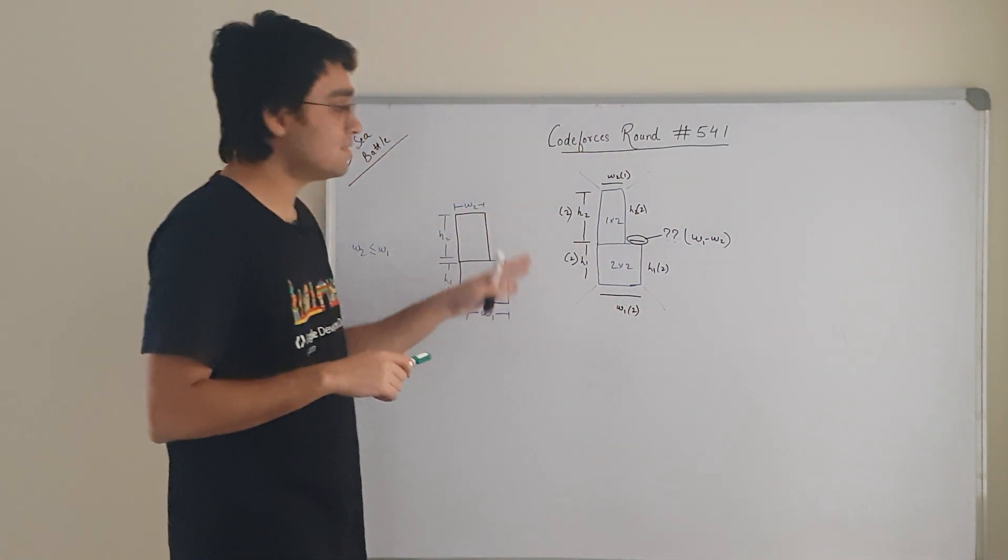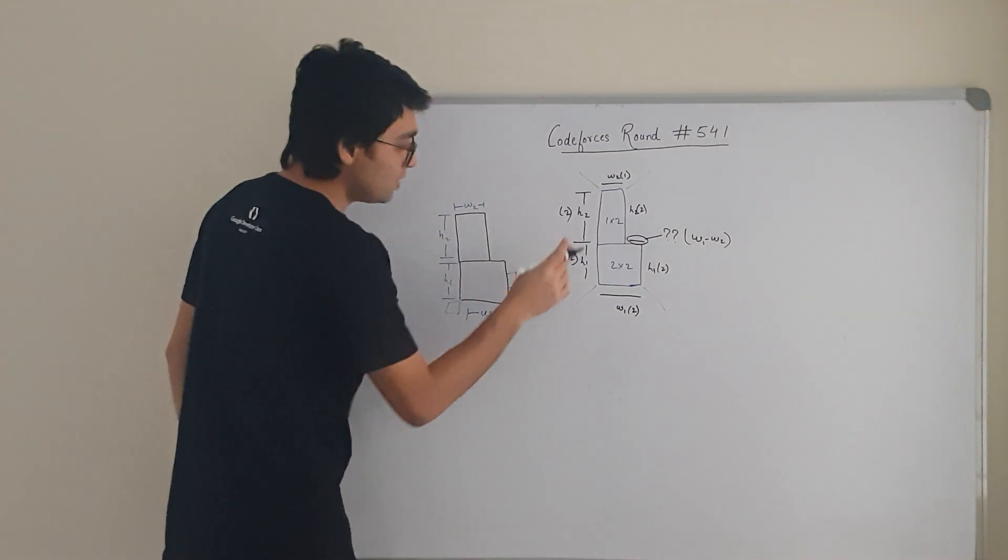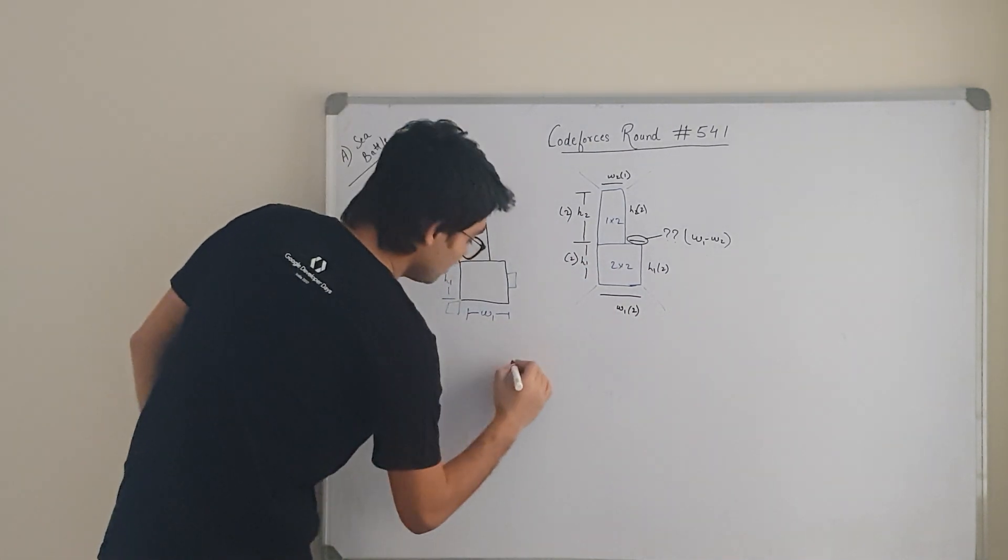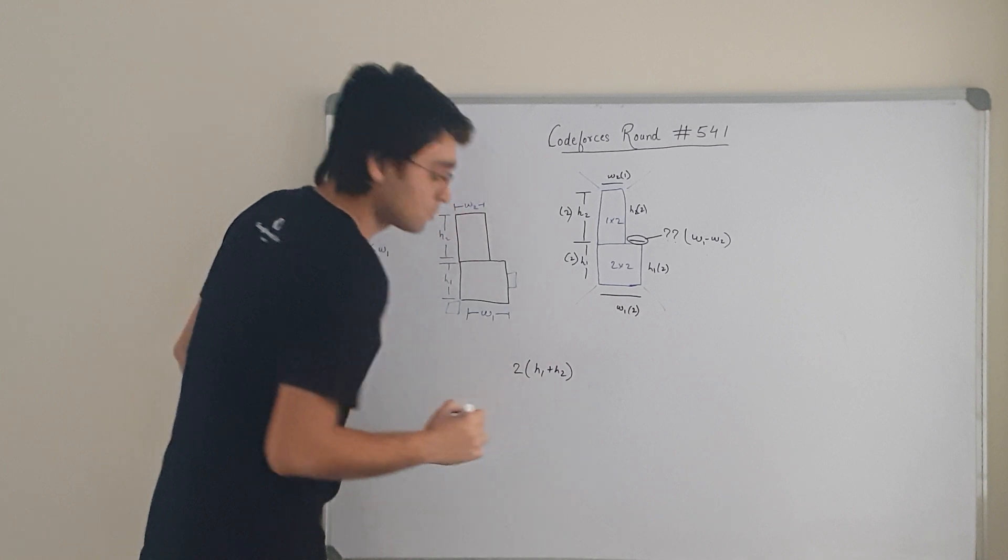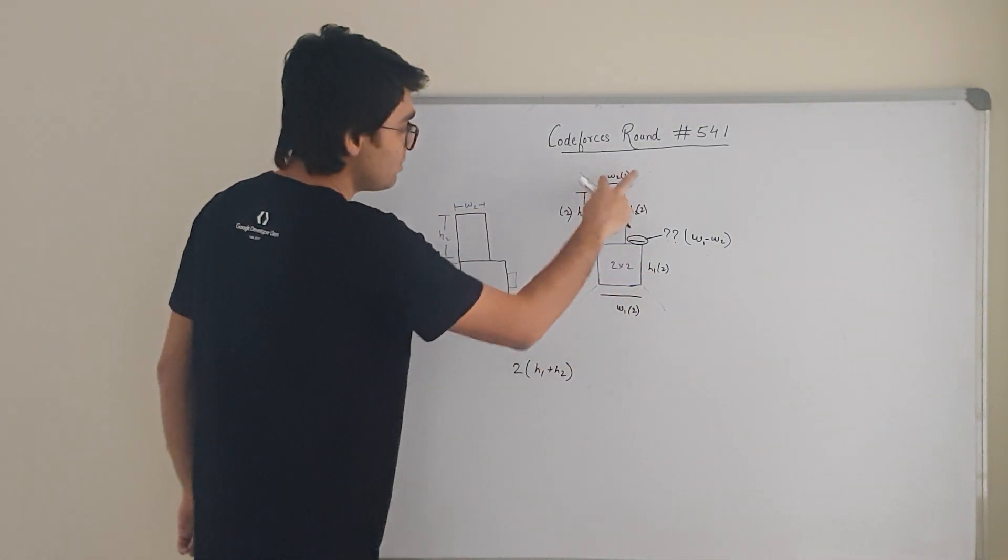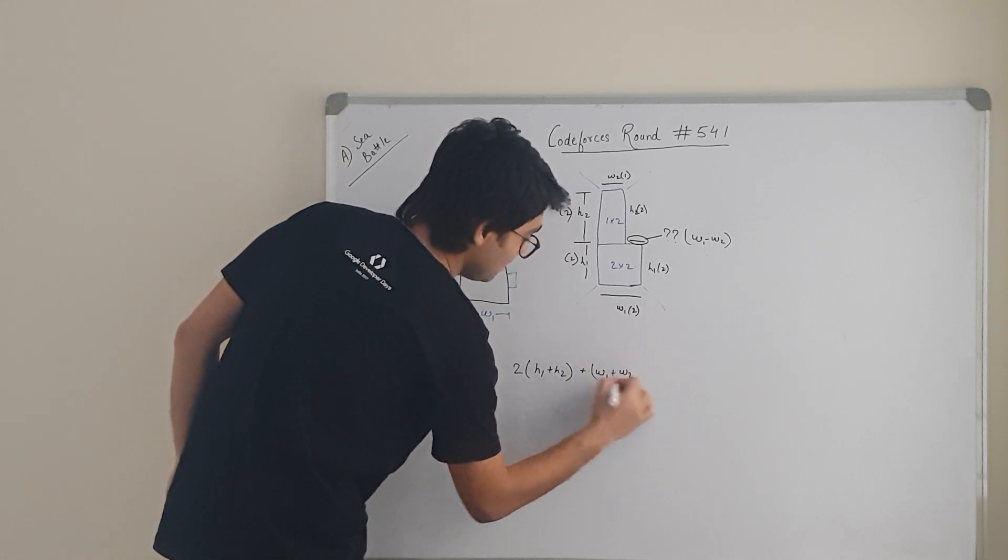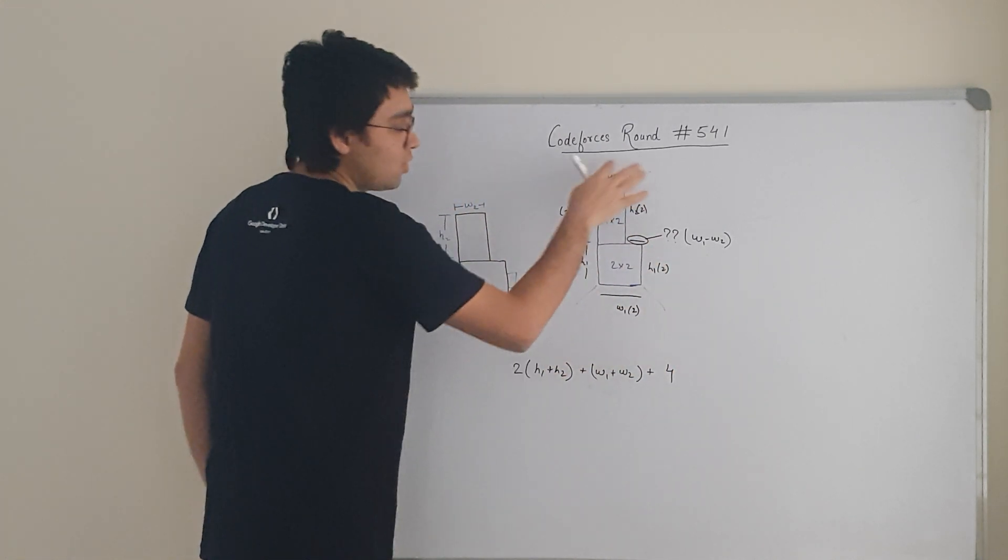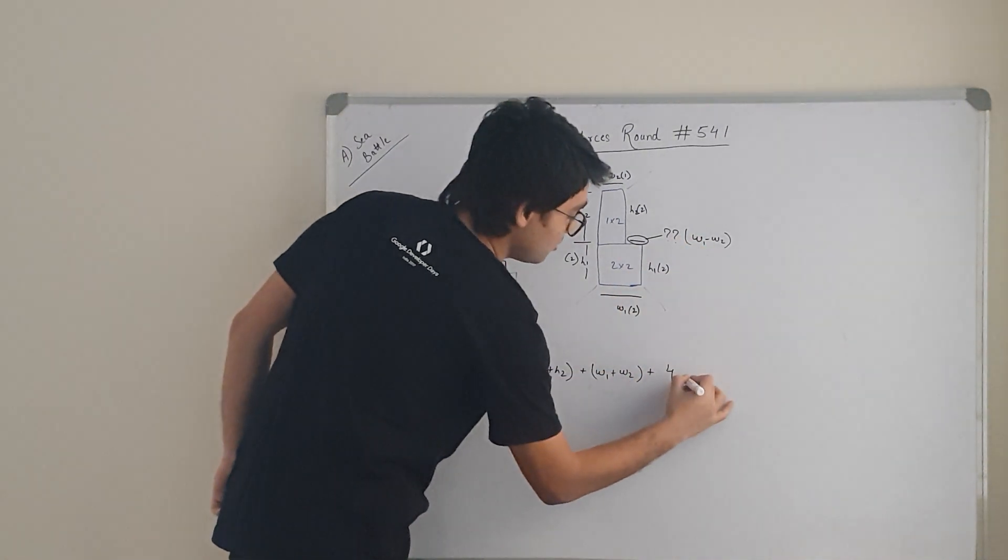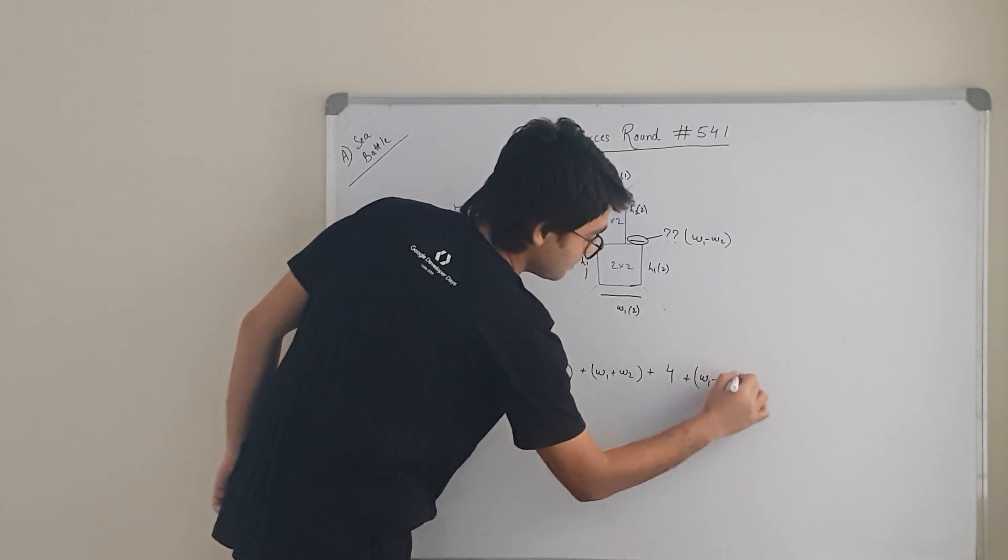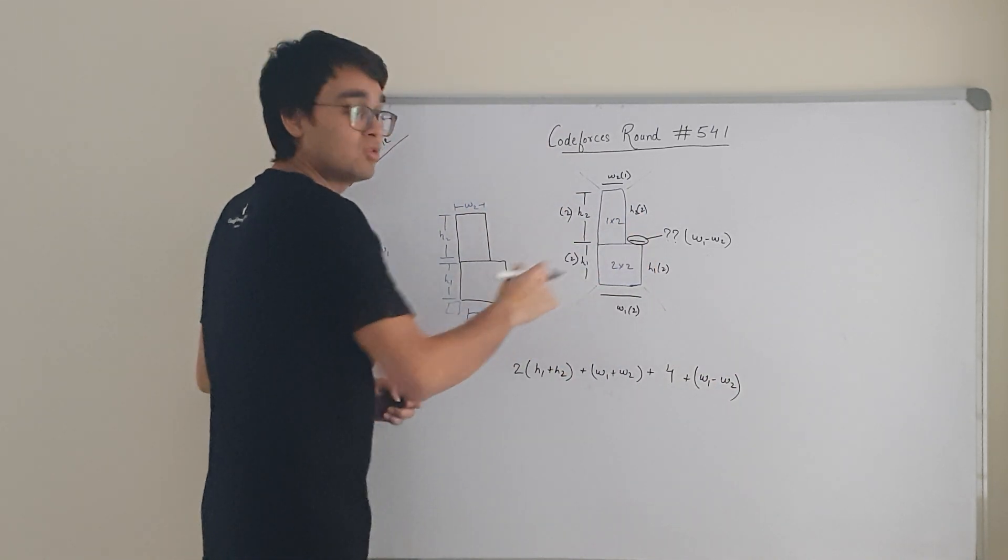If we generalize this, what is going to be the answer? The answer is going to be you are taking H1 and H2 twice, so it is 2 into H1 plus H2. Then you are taking W1 plus W2 once. Then you have 4 cells which are for these 4 corners. Then finally you have this W1 minus W2. This part will take care of the cells which are going to be here.